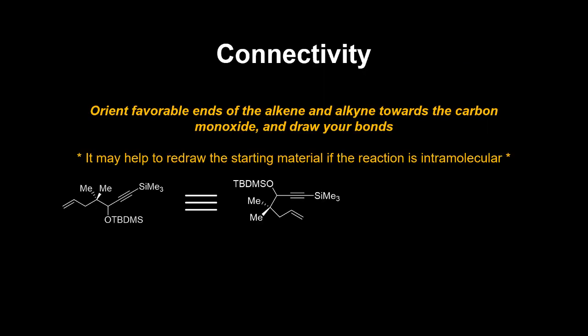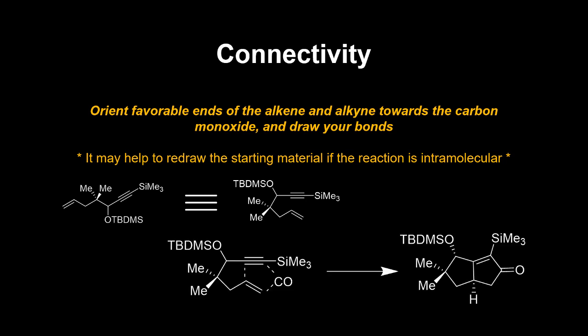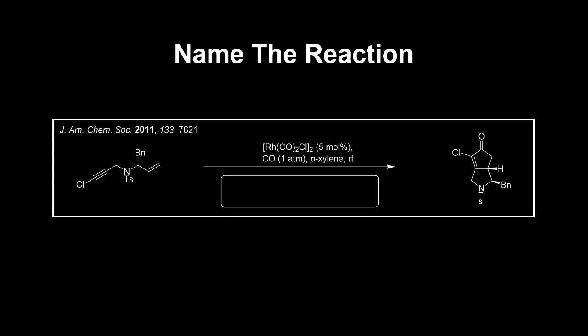When faced with the task of predicting the product of a Pauson-Khand reaction, the process is relatively simple. Keeping in mind the trends we went over earlier, simply orient the favorable ends of the alkyne and alkene towards a carbon monoxide and draw on your bonds. If the reaction is intramolecular, it will certainly help to redraw the molecule in a way that makes the reactivity more apparent. Here's a practice problem to help you distinguish between the two types of Pauson-Khand reactions we've gone over.